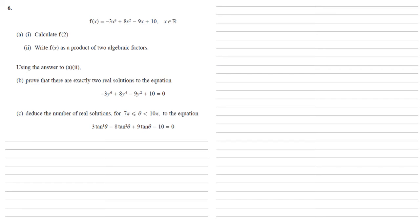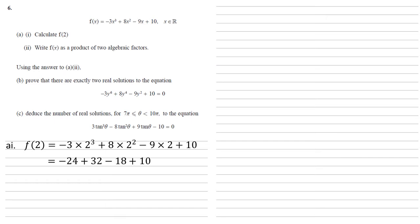We are given that f(x) equals minus 3x cubed plus 8x squared minus 9x plus 10. First of all we want to calculate f(2). To do this we simply substitute 2 into the equation, which gives us minus 3 times 2 cubed plus 8 times 2 squared minus 9 times 2 plus 10, which gives us minus 24 plus 32 minus 18 plus 10, which come together to equal zero.